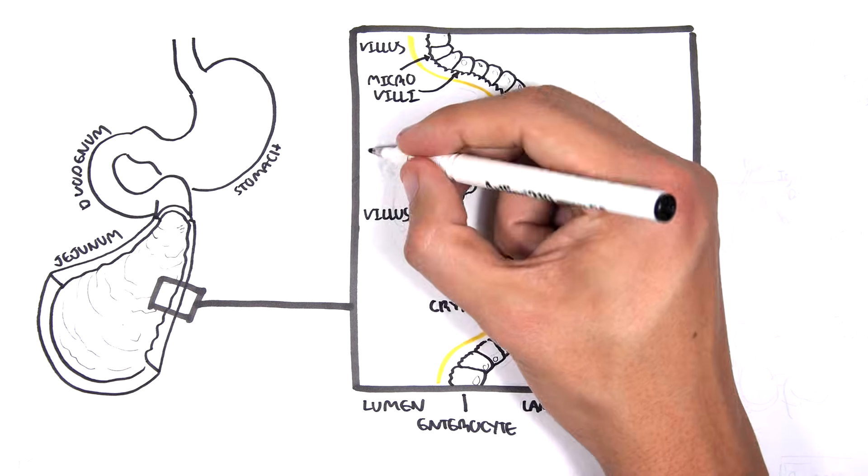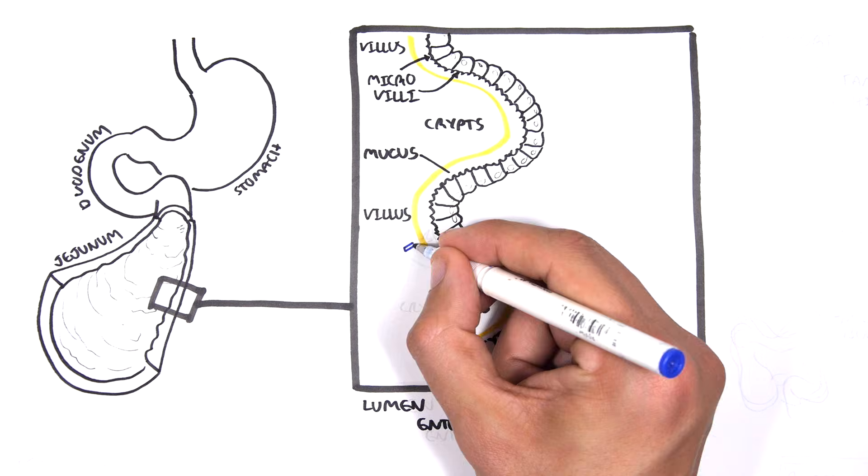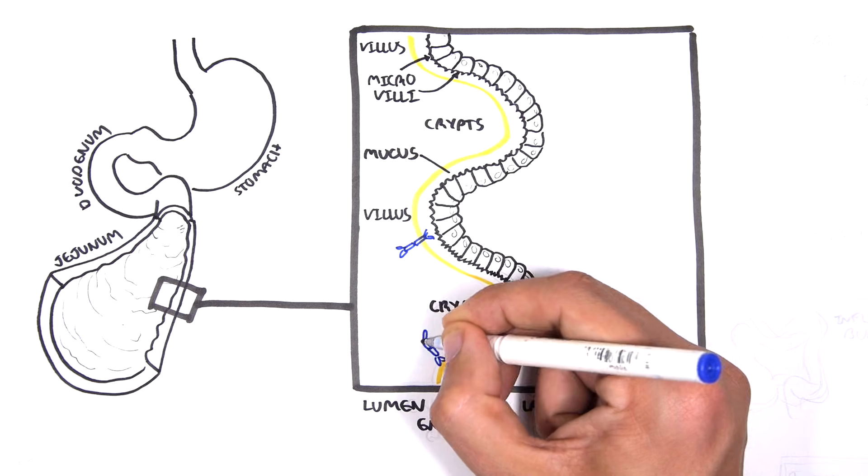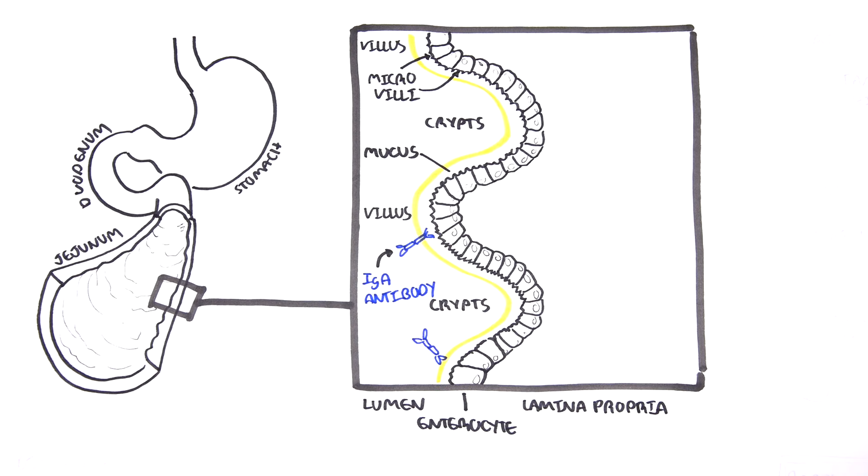As mentioned, here in yellow is the mucus, which actually lines and protects the mucosal cells, the enterocytes. And residing on top of the mucus, we can find antibodies, IgA, dimeric antibodies. IgA antibodies are the antibodies of the mucosal immune system and help defend against infections.